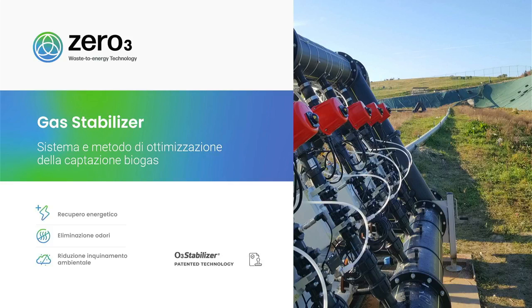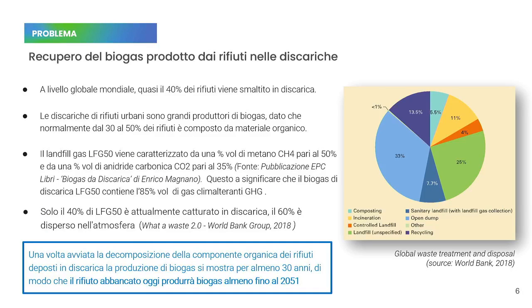Un accenno molto veloce sulla situazione a livello mondiale dell'utilizzo di discariche per lo smaltimento dei rifiuti. Da questo grafico, preso da una pubblicazione della World Bank, si vede in modo inequivocabile che almeno il 60% del rifiuto viene ad oggi inviato in discarica e quindi per i prossimi 30 anni questo rifiuto, composto in buona parte anche dalla sostanza organica, produrrà biogas e dovrà essere gestito per evitare l'inquinamento atmosferico.